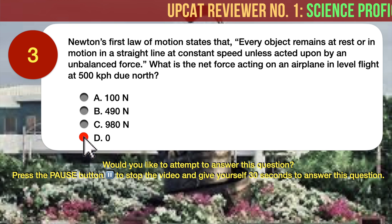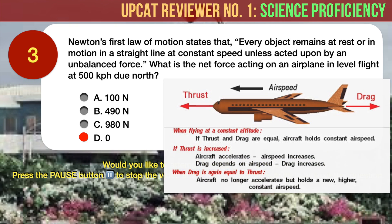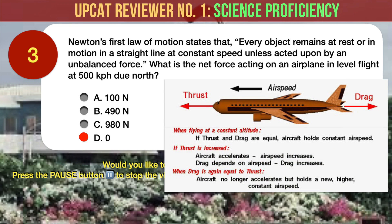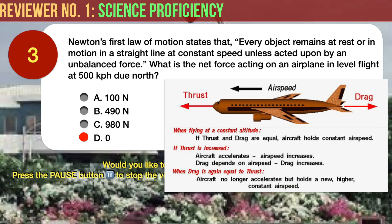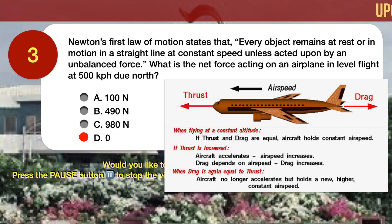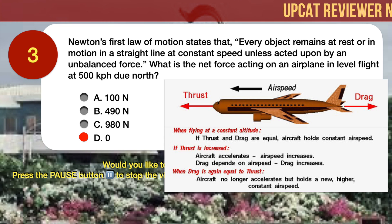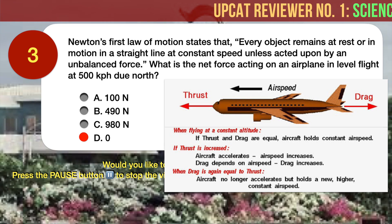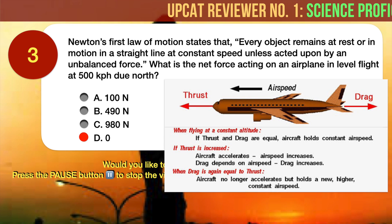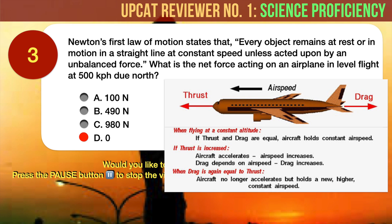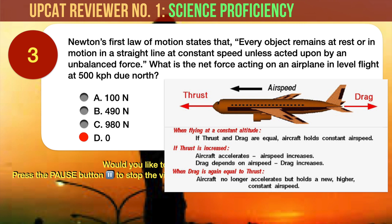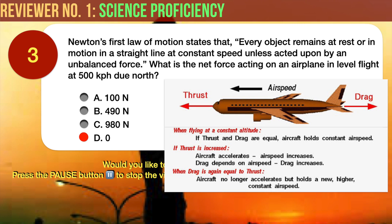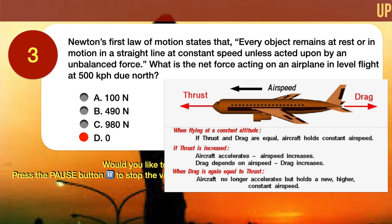The correct answer is D, Zero. An aircraft in flight is a particularly good example of the first law of motion. There are four major forces acting on an aircraft: lift, weight, thrust, and drag. If we consider the motion of an aircraft at a constant altitude, we can neglect the lift and weight. A cruising aircraft flies at a constant airspeed and the thrust exactly balances the drag of the aircraft. There is no net force on the airplane and it travels at a constant velocity in a straight line.